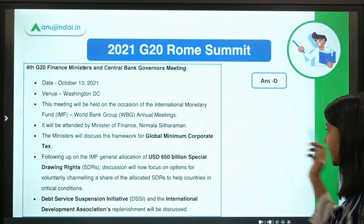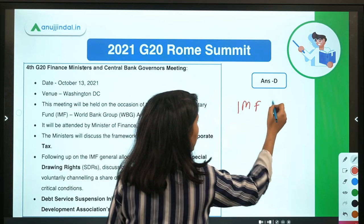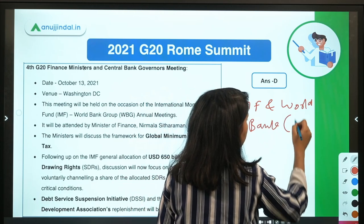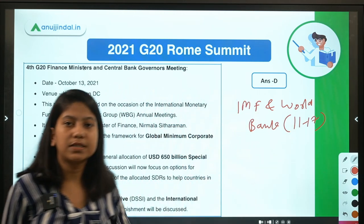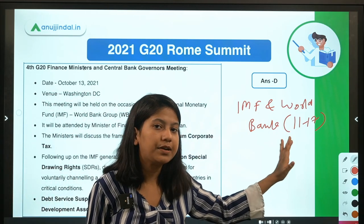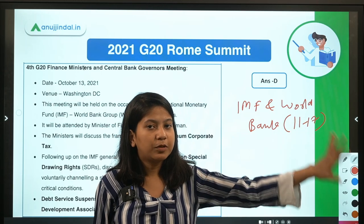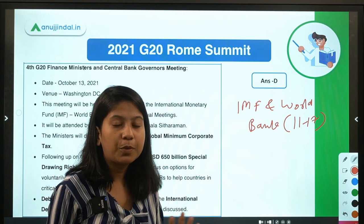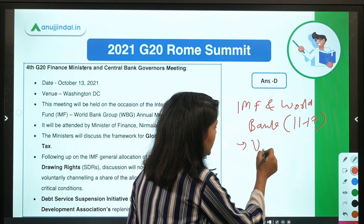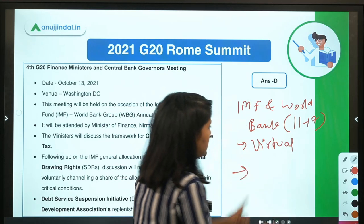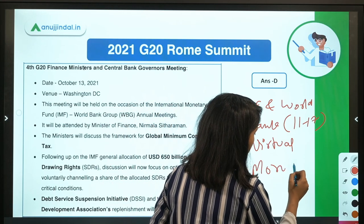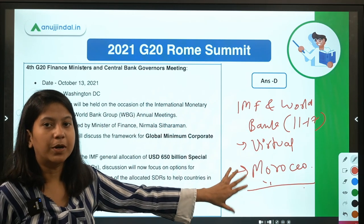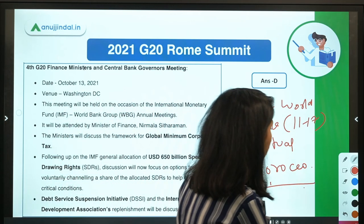Before moving ahead, the IMF and World Bank Annual Meeting is ongoing from the 11th to the 17th. From an exam perspective, what you need to know is that this year's edition was virtual, and the venue for next year's IMF and World Bank Annual Meeting is Morocco. Do remember that point.